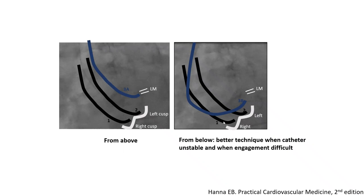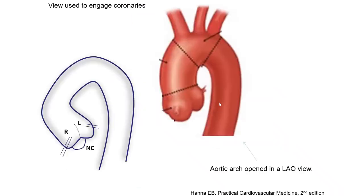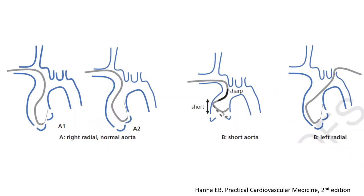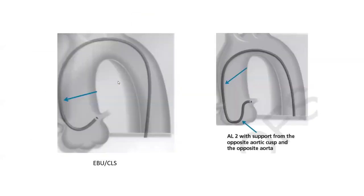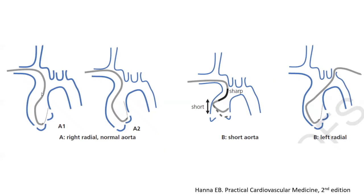There are two techniques after jumping into the left cusp. The first, which works well in diagnostic cases, is to just pull and try to jump into the left main, reacting to your catheter with subtle torque. The second technique is to push the catheter and make it loop up from below to engage the left coronary — this is better for guiding catheters during intervention and when the catheter is unstable with difficult engagement. For a patient with a sharp and short aorta, the pull technique won't work because the whole system will jump out into the aortic arch; you need to push and engage from below.